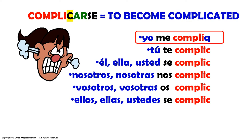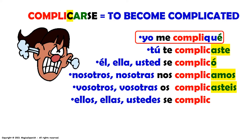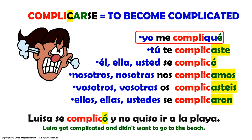Complicarse. Yo me compliqué. Tú te complicaste. Él, ella, usted se complicó. Nosotros, nosotras nos complicamos. Vosotros, vosotras os complicasteis. Ellos, ellas, ustedes se complicaron. Example: Luisa se complicó y no quiso ir a la playa.